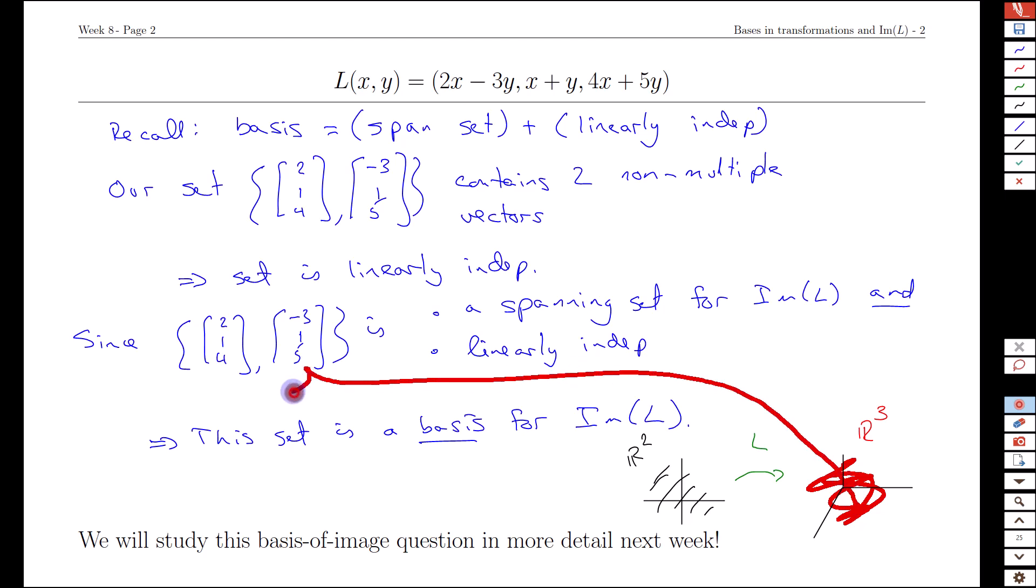It's the space spanned by these two linearly independent vectors. Imagine we have the vector [2, 1, 4] and the second vector in arbitrary directions—not drawn to scale or in the right direction, just to give an impression. If we have those two vectors together, they define a plane. The image of L—the points we can reach from R² through that transform into R³—that plane is the image of L.